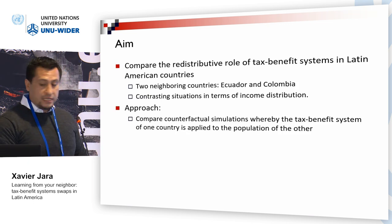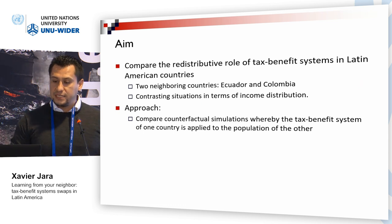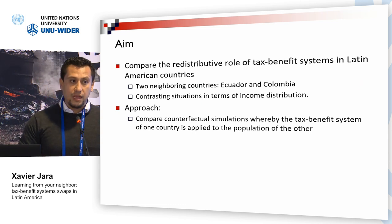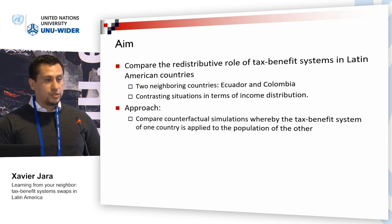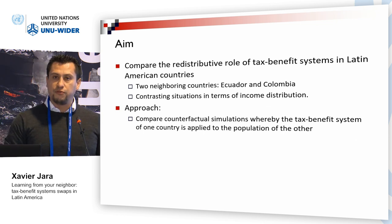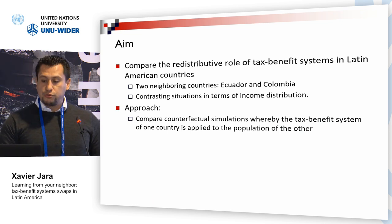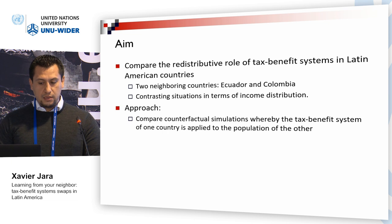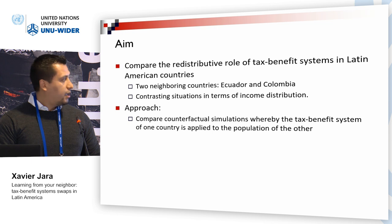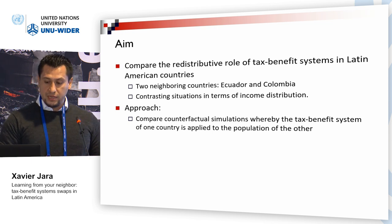The aim of this paper is to compare the redistributive role of tax benefit systems in Latin American countries. We take two neighboring countries, Ecuador and Colombia, which present contrasting situations in terms of income distribution. The approach we take is to compare counterfactual simulations whereby the tax benefit system of one country is applied to the population of the other, taking full advantage of the tools of micro-simulation that have been developed.